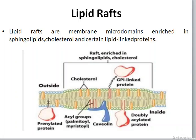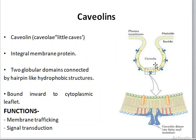Lipid rafting generally involves internalization of this region into the intracellular compartment. Whatever information has bound to this region, the cell tries to pass this information by membrane trafficking, that is, by internalizing it. The cell membrane forms a pit-like or cave-like structure and tries to pass this information into the cell.